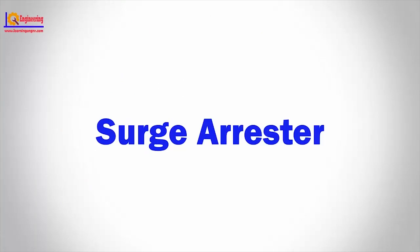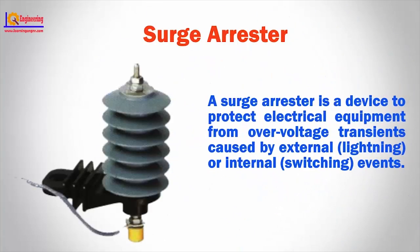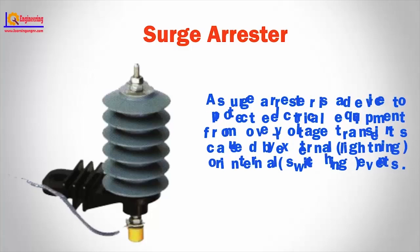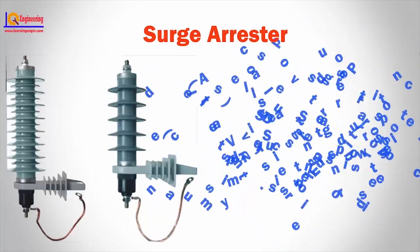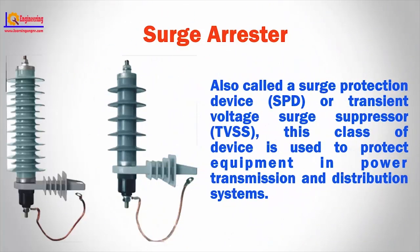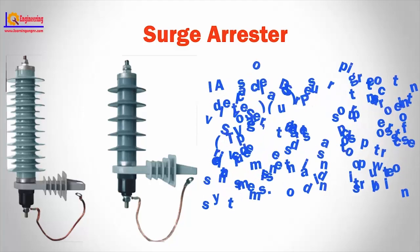Surge arrester. A surge arrester is a device to protect electrical equipment from over-voltage transients caused by external or internal events. Also called a surge protection device, SPD, or Transient Voltage Surge Suppressor, TVSS. This class of device is used to protect equipment in power transmission and distribution systems.